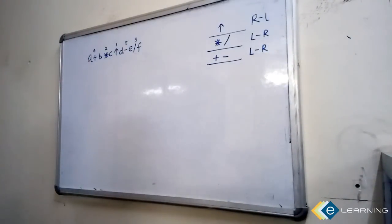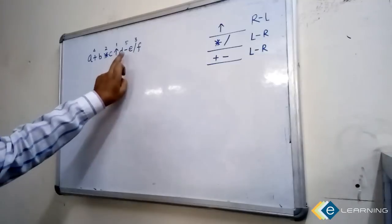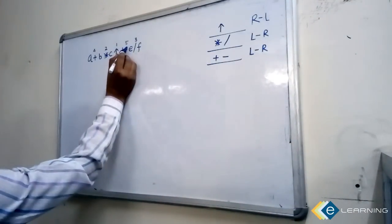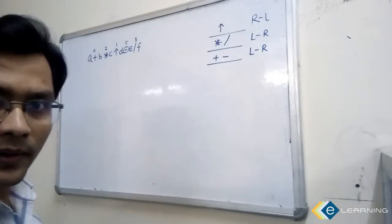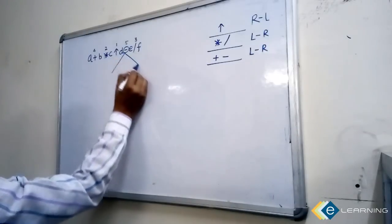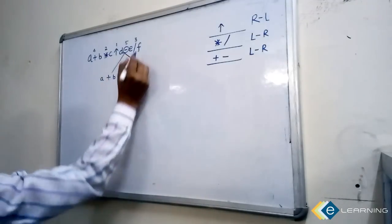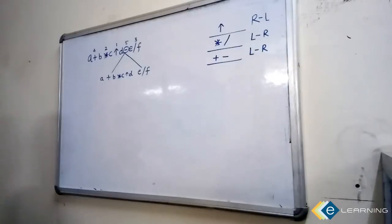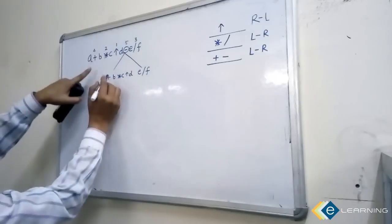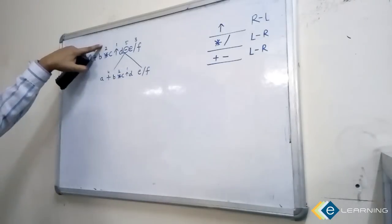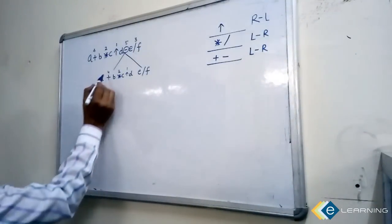The operator that evaluates last becomes the root. Make it the root and divide the expression into two valid sub-expressions: the first is a plus b star c power d, and the second is e divided by f. Now using the same numbering from before — four and second and first — in the left sub-expression, the operator evaluating last is plus, so make it the parent.